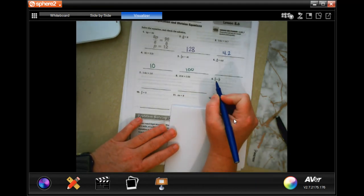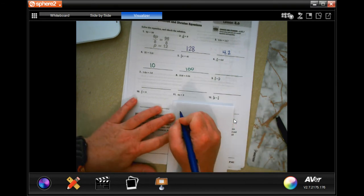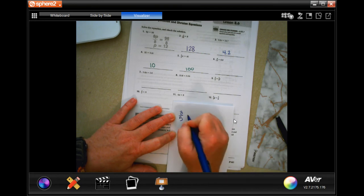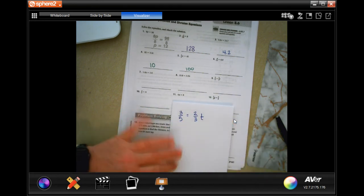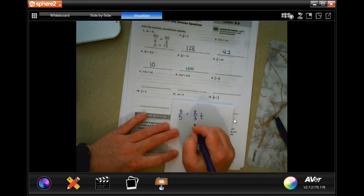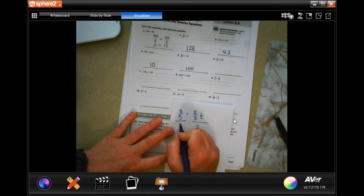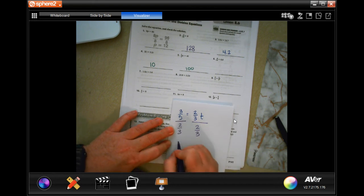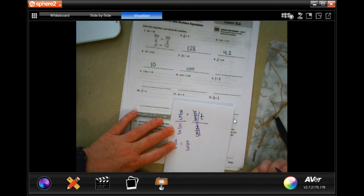I'm going to skip down to number 9 because you guys can totally do these other ones by now. So, we're going to skip to number 9. 3 fifths equals 2 thirds T. So, again, I'm going to divide this by 2 thirds. Because this is multiply and I need the T alone. I'm going to divide this one by 2 thirds. So, now, I have 3 fifths divided by 2 thirds because these ones cancel out.